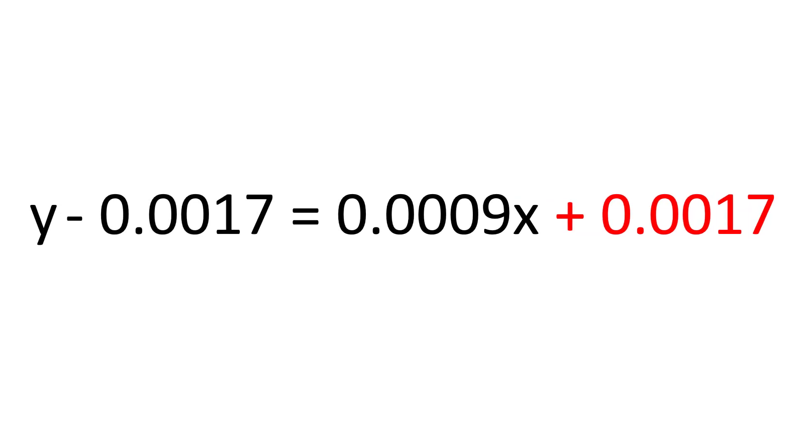Doing this on the left side of the equation will mean I now have y subtract 0.0017 and on the right side of the equation the y intercept will no longer be there, since 0.0017 subtract itself is 0.